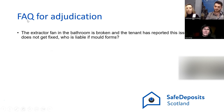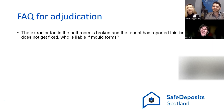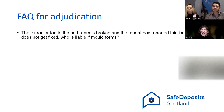If the extractor fan in the bathroom is broken and the tenant has reported this issue but it does not get fixed, who is liable if mould forms? It depends on all the evidence, but in a situation where the extractor fan is broken in the bathroom, it is usually the landlord's responsibility to get that fixed. If they don't get it fixed — say it's a dark bathroom in a Glasgow tenement with no other form of ventilation — and mould forms, then the tenant can point to the fact that they've reported it and no action was taken. The landlord is under a responsibility to make sure that any extraction systems within the property for the purposes of ventilation are properly operational.